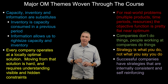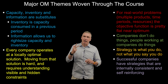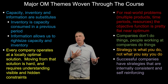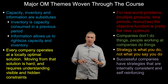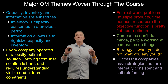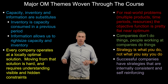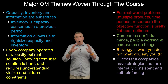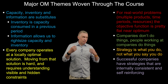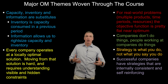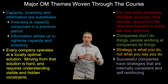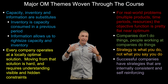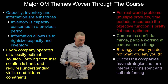Companies don't do things — people at companies do things. This ties directly back to people, process, and technology. We want to understand who is actually going to make a change and implement it. Strategy is what you do, not what you say you do. Companies have corporate, business, finance, marketing, purchasing, and operations strategies, and successful companies have strategies that are internally consistent and self-reinforcing. We can't look at operating strategy independent of those other strategies.